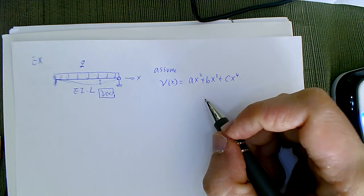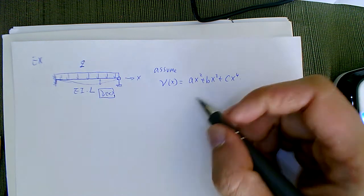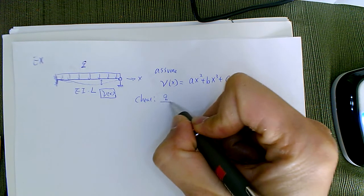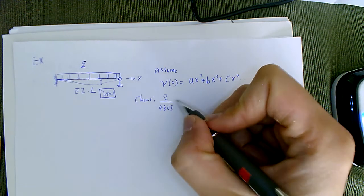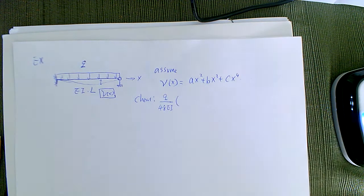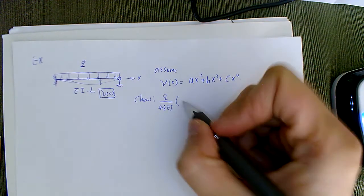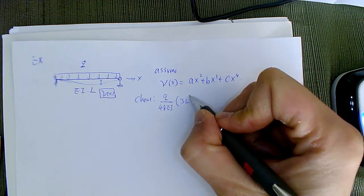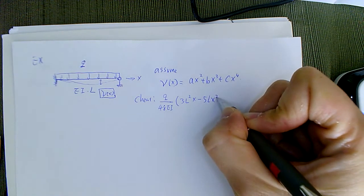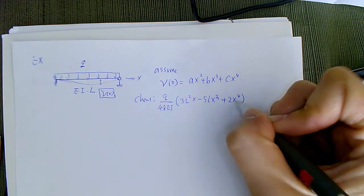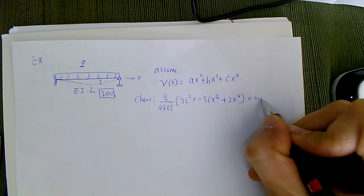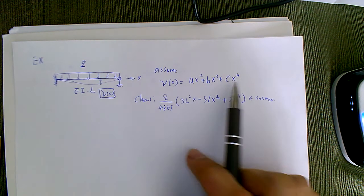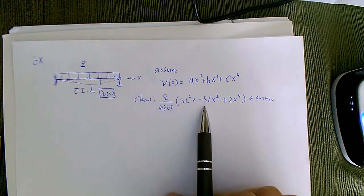I picked those terms because I want to show you this example actually works. If you have a beam deflection table in a mechanics of materials book, you'll find a formula for this situation. The deflection curve is actually 3L²x - 5Lx³ + 2x⁴, scaled appropriately — that's actually the answer. I assumed the same form, so let's see if we can get A, B, C solved to match exactly those components.